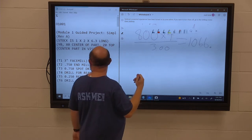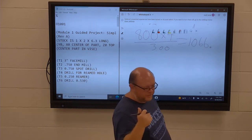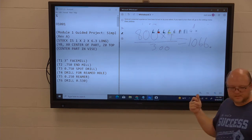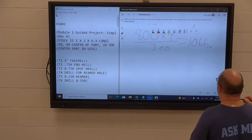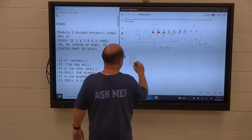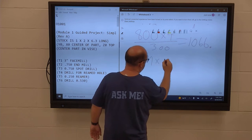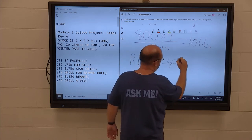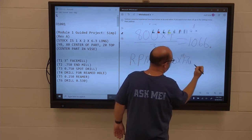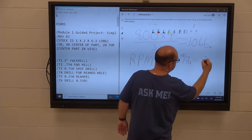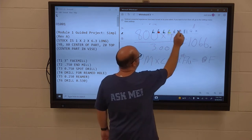So then we want to do our inches per minute. Where do you look for that? We want to take the RPM times chip load times the number of flutes. Chip load's on the next page. RPM times chip load times flutes equals feed rate.